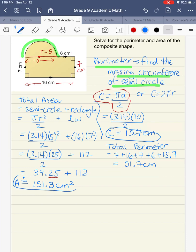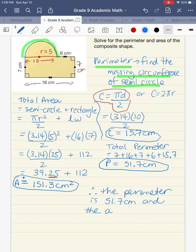So that is our total area. So let's write a therefore statement. Therefore, the perimeter is 51.7 centimeters, and the area is 151.3 centimeters squared.